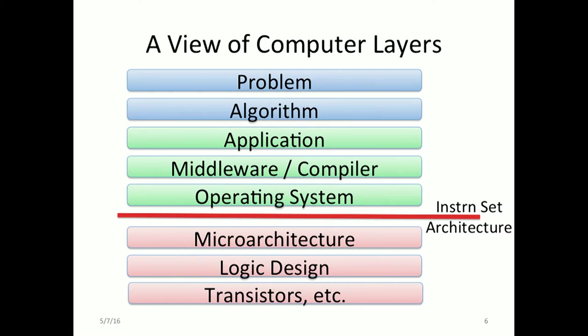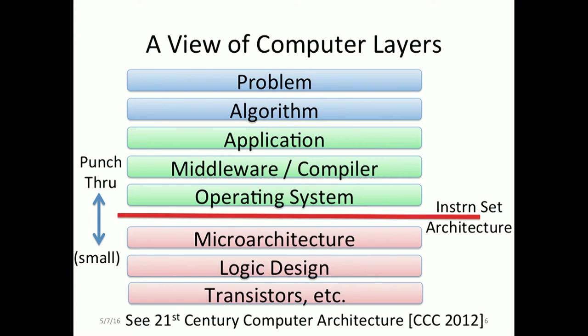The instruction set architecture is one of the most important layers. Especially in the 20th century, things were moving ahead so fast that you could concentrate on your layer and were not allowed to touch other layers — like trying to propose a prefetch instruction and people saying no. Especially with the end of Dennard scaling, it makes a lot of sense to revisit this and try to punch through the layers. We don't want to discard the layers because they do serve a useful function in dividing and conquering complexity.